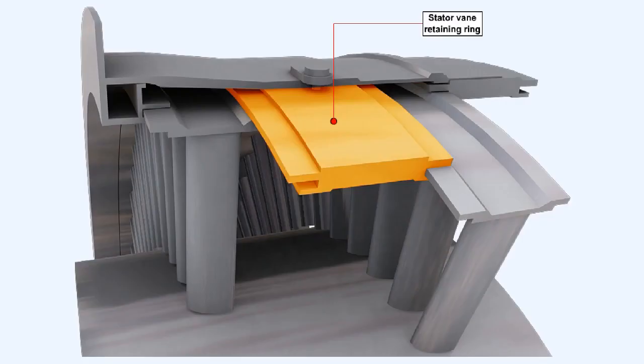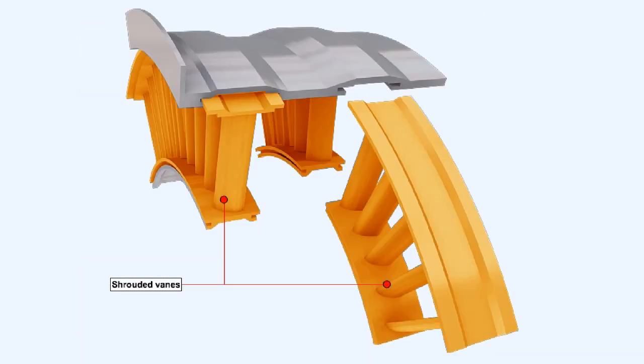The stator vanes similar to the rotor blades are also airfoil shaped. They are either fixed into stator vanes retaining rings which are themselves fastened to the casing or they are fixed to the compressor casing directly as are these shrouded vanes shown here. The shrouding at the inner ends of the stator vanes prevents them vibrating. The vibration can be induced by the velocity of the airflow over them.